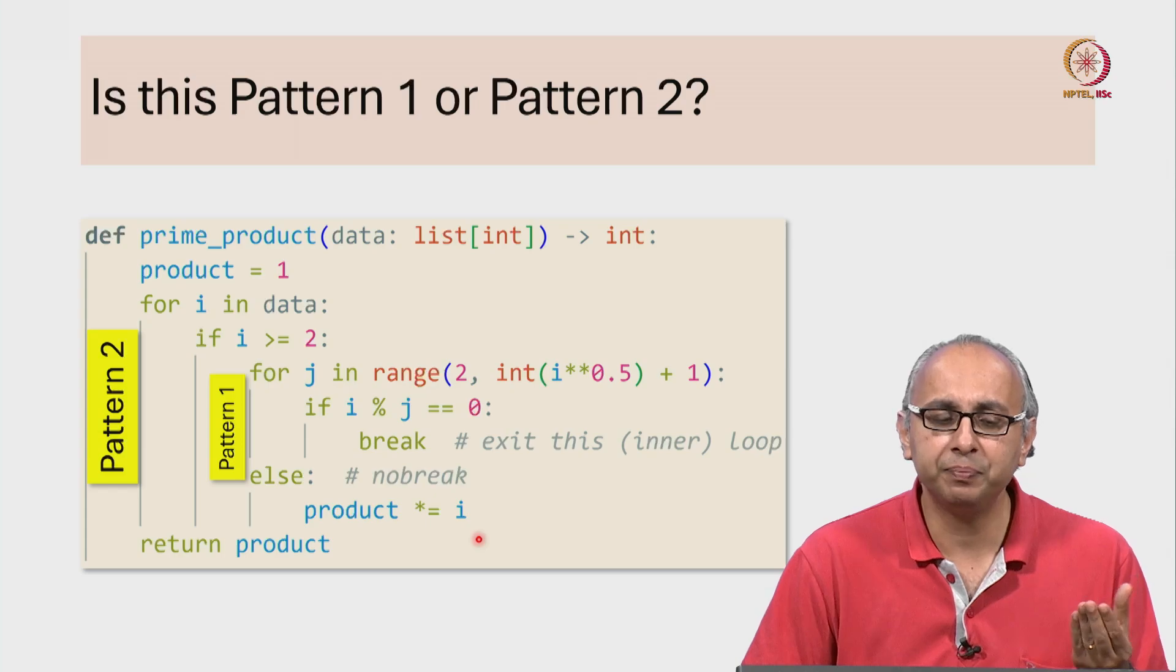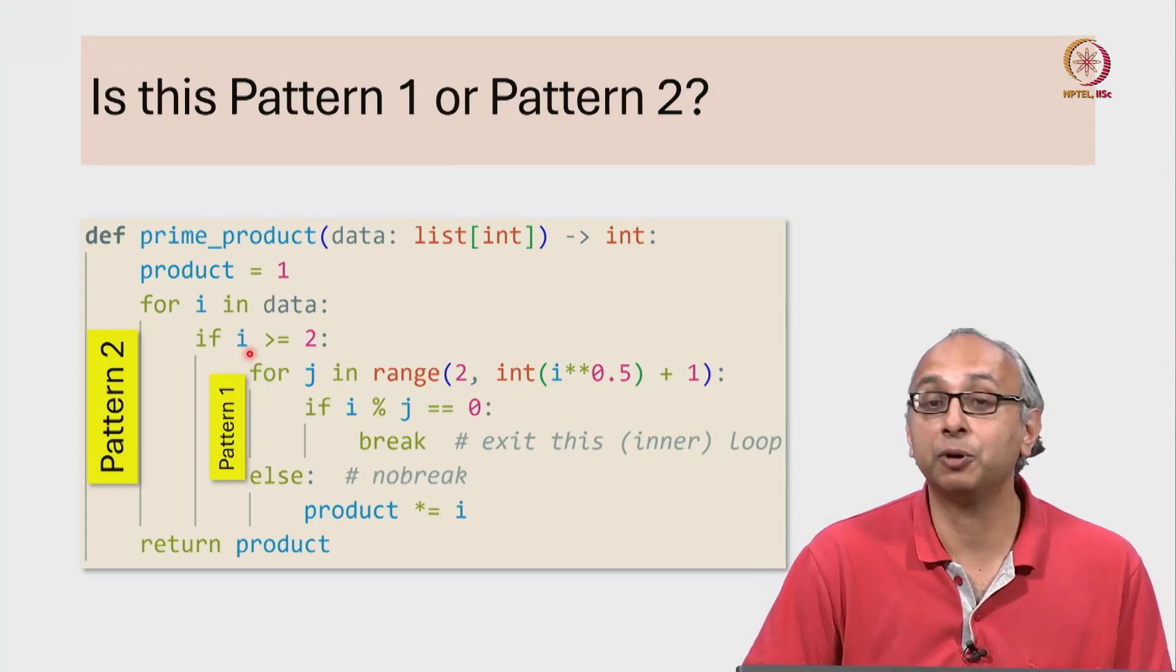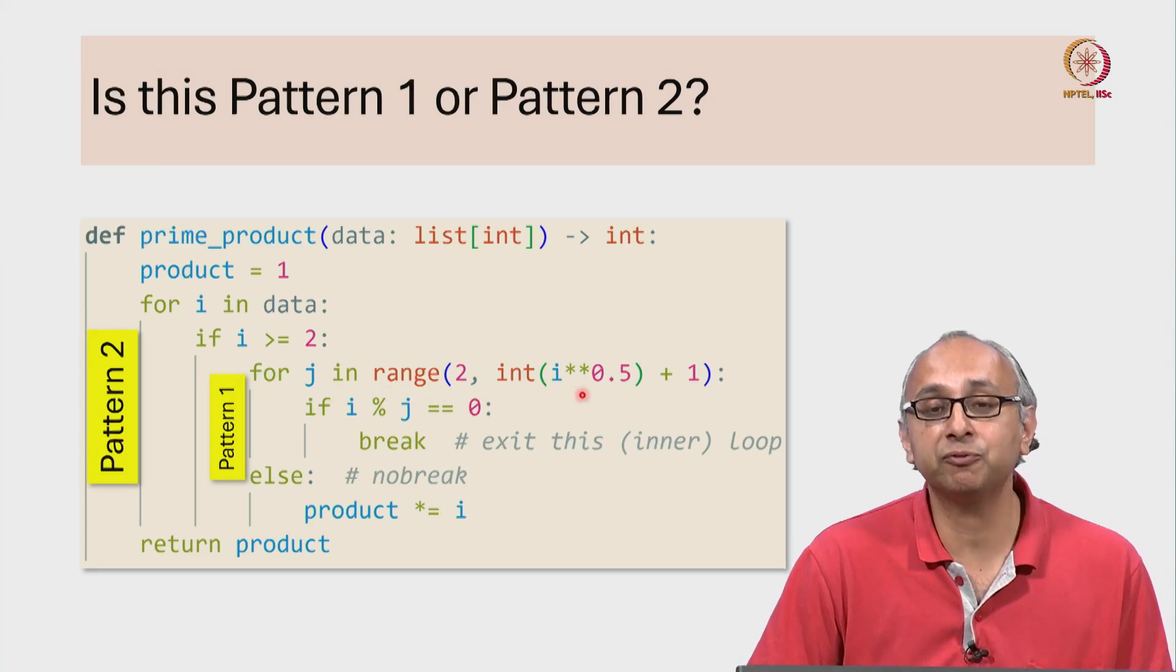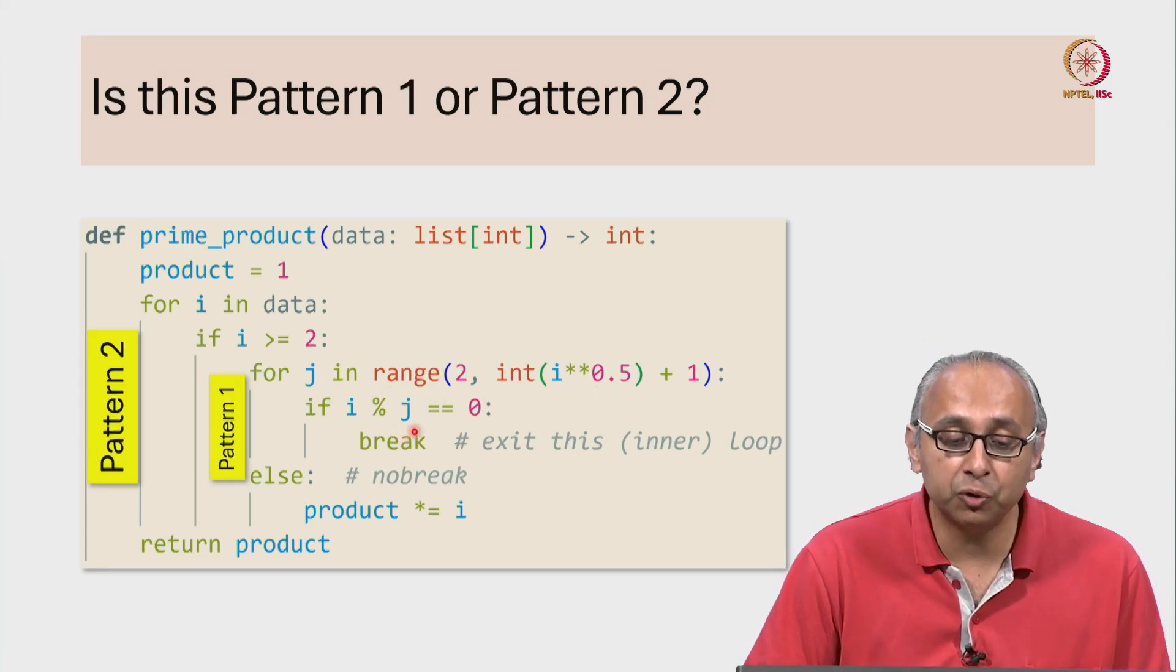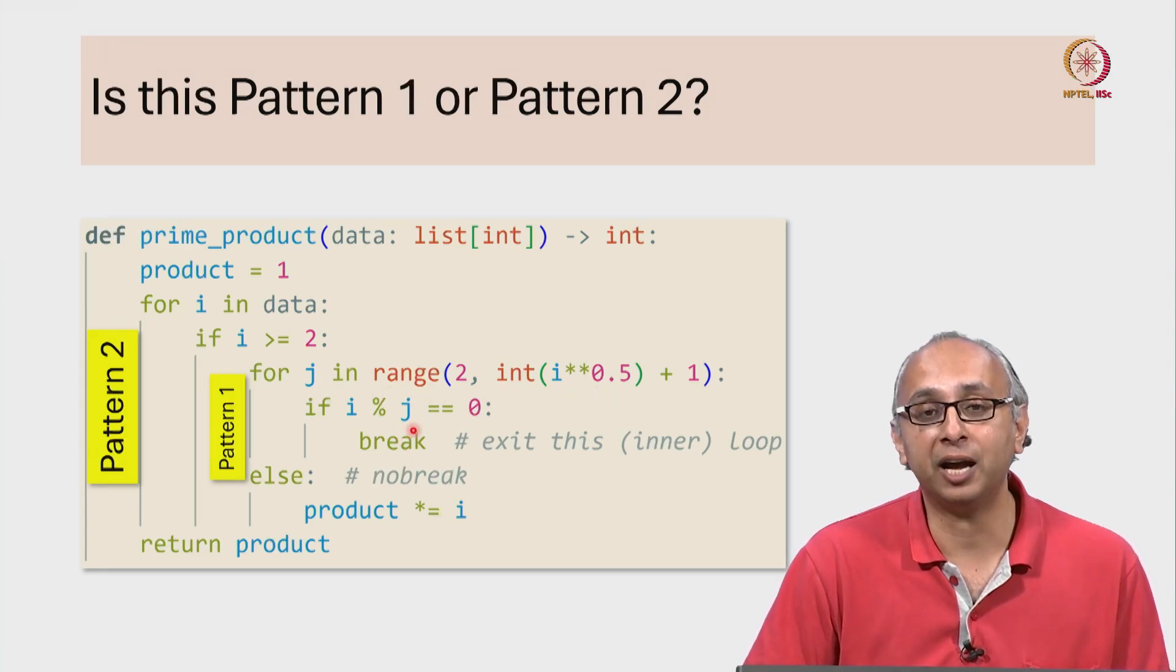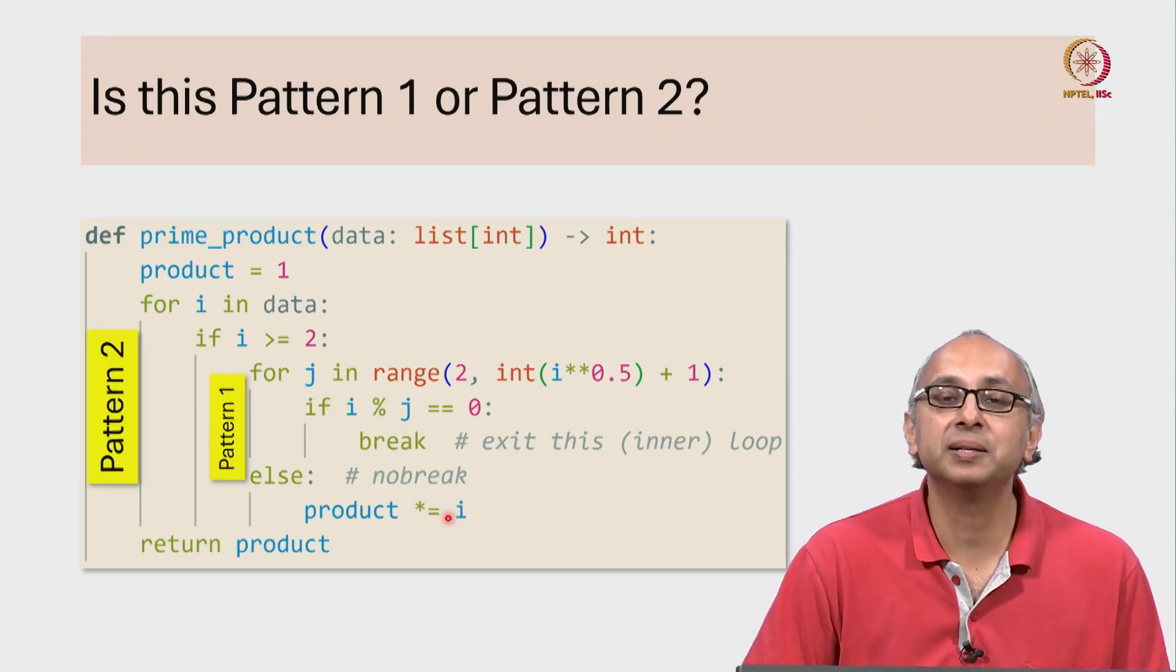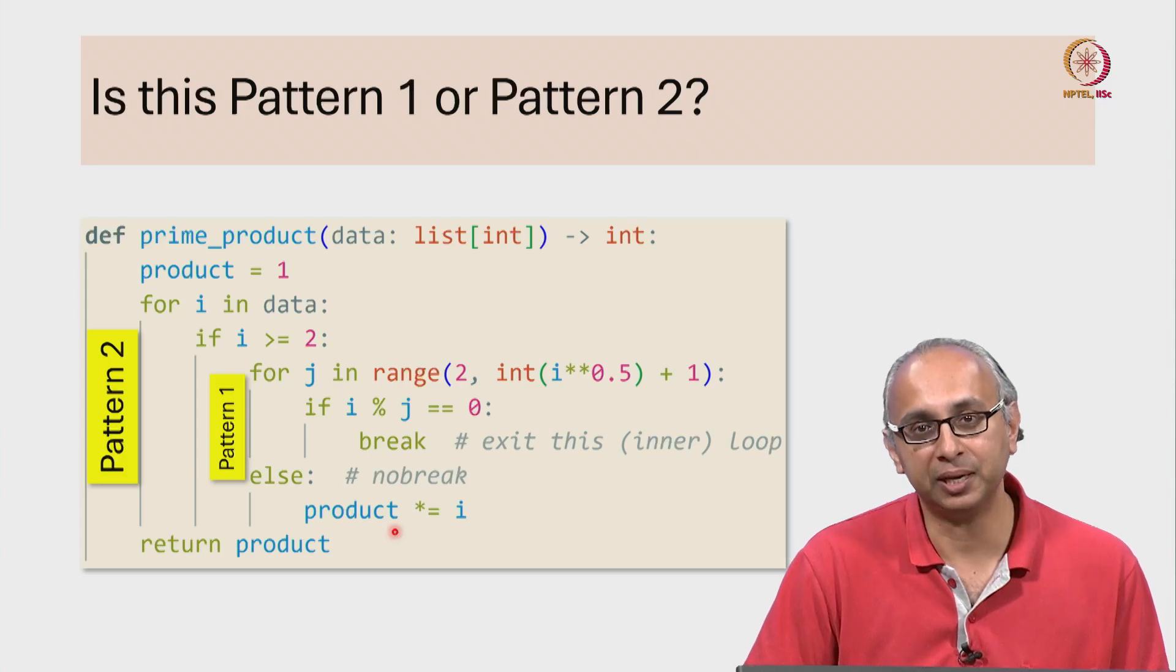Why is it a prime? Well firstly it is greater than or equal to 2 and secondly we scanned through all these different values of j and none of those were a factor of i so this value i must be a prime. And then we can take that and multiply it into our accumulator.